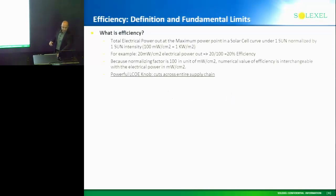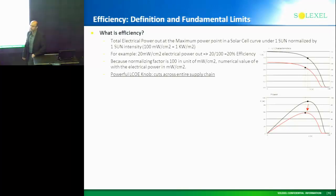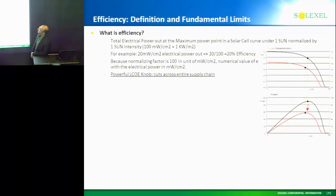I know it's kind of simplistic — what is efficiency, right? But actually you'd be surprised. It's total electrical power out, electrical power at the maximum power point in a solar cell curve under one sun normalized intensity.